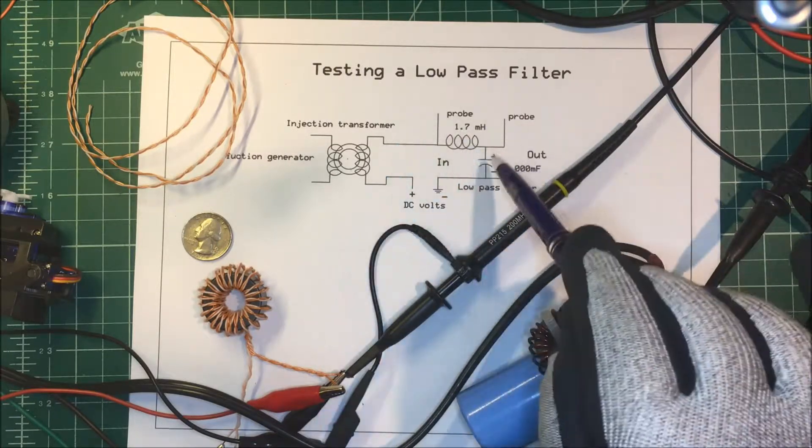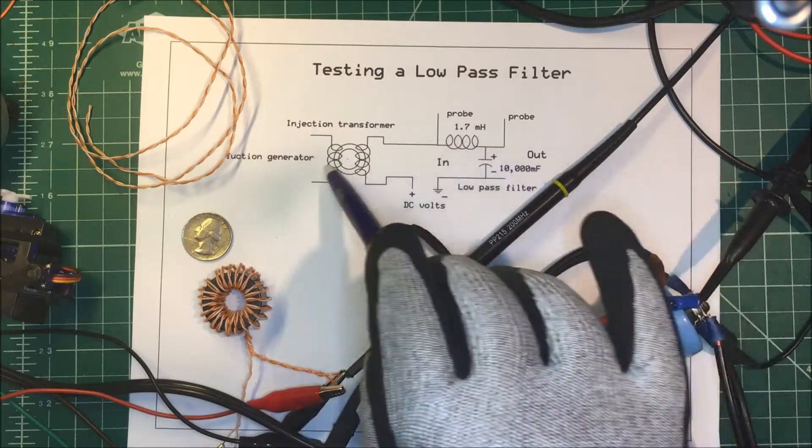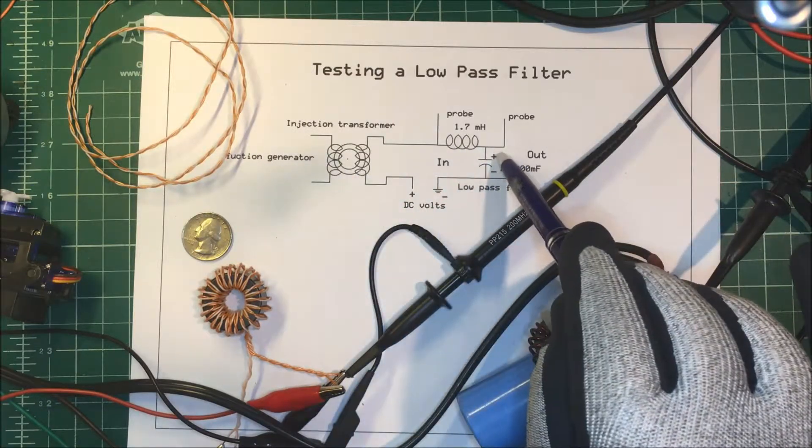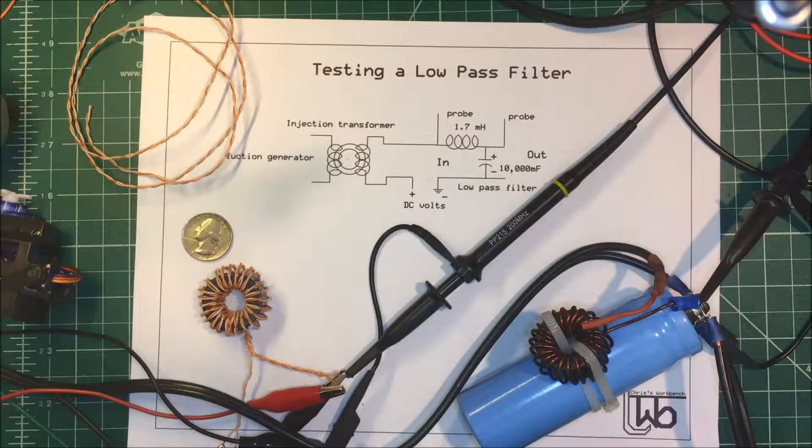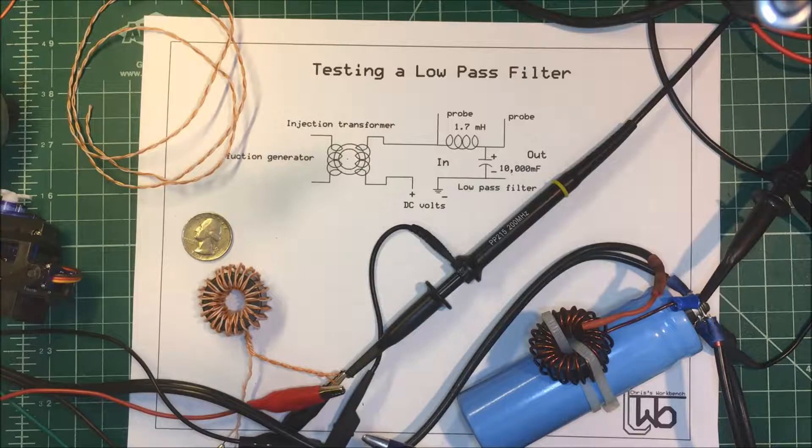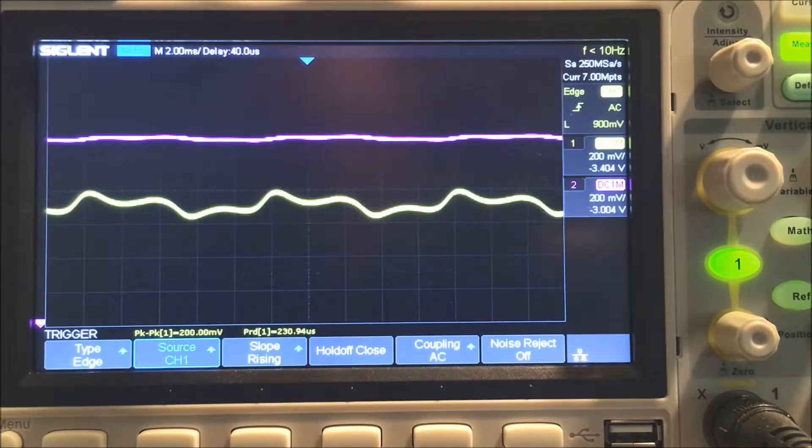This will stay positive all the time but it'll fluctuate up and down. So we'll maintain our positive voltage here while putting an AC signal into our filter, and we'll see what comes out the other side. We're going to go to the scope now and see what happens. Here we are at the oscilloscope.